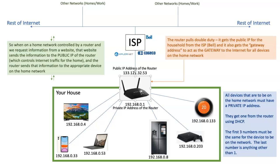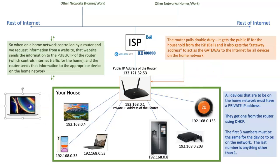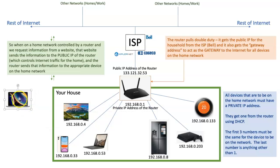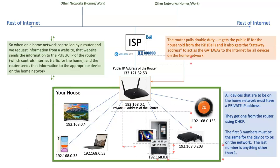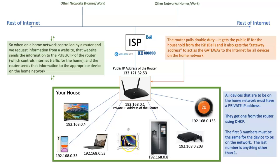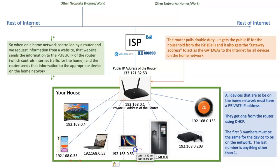Let's do an example — we're going to go buy a new MacBook. I buy a MacBook from the store and take it home. The MacBook is off, so it doesn't have an IP address yet. But as soon as we turn it on, we want to go online, and all of a sudden we get an IP address — well, that's not quite what happens. Let's look at what happens behind the scenes.